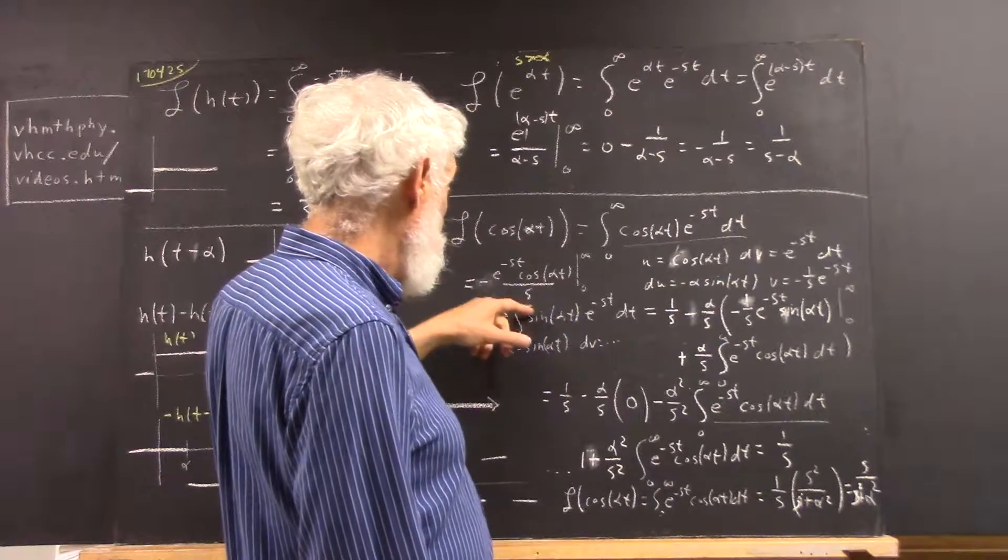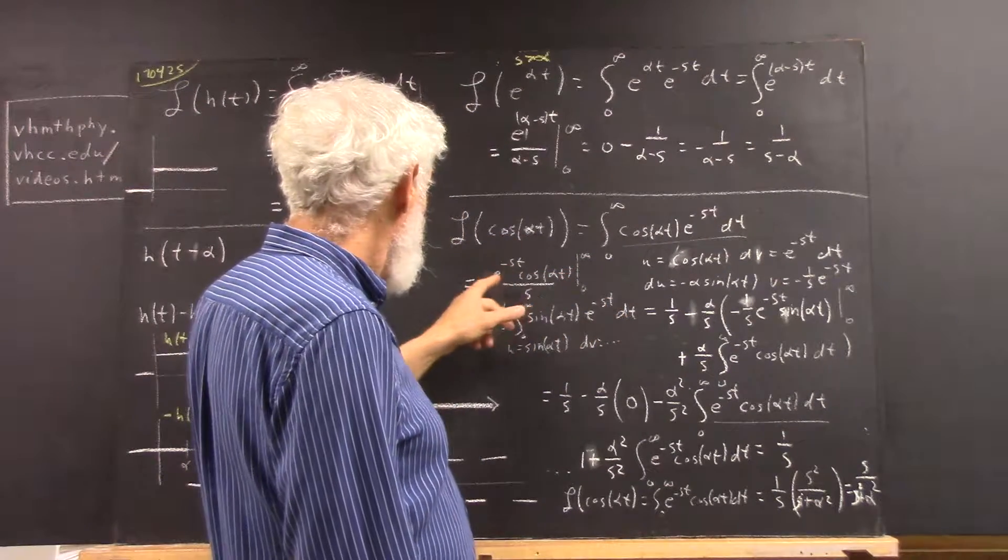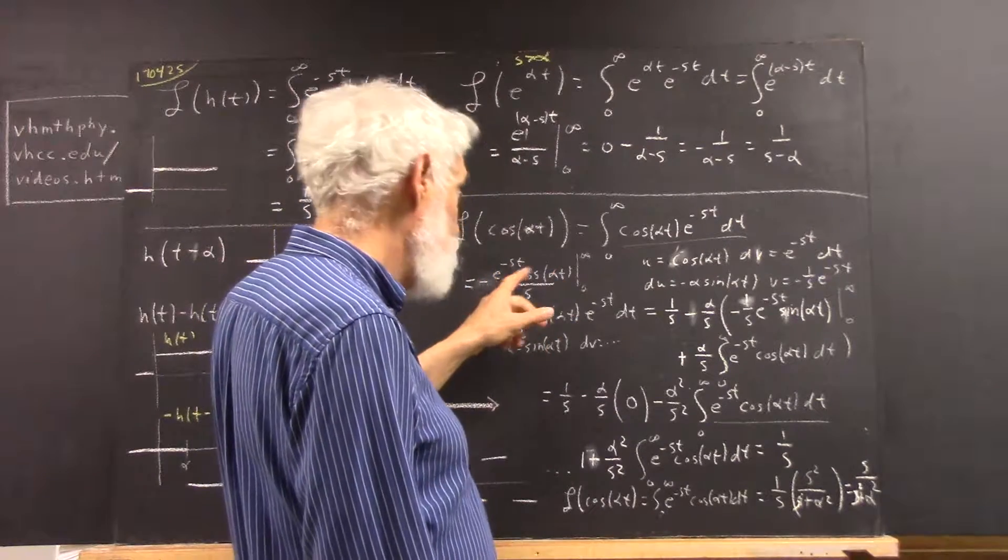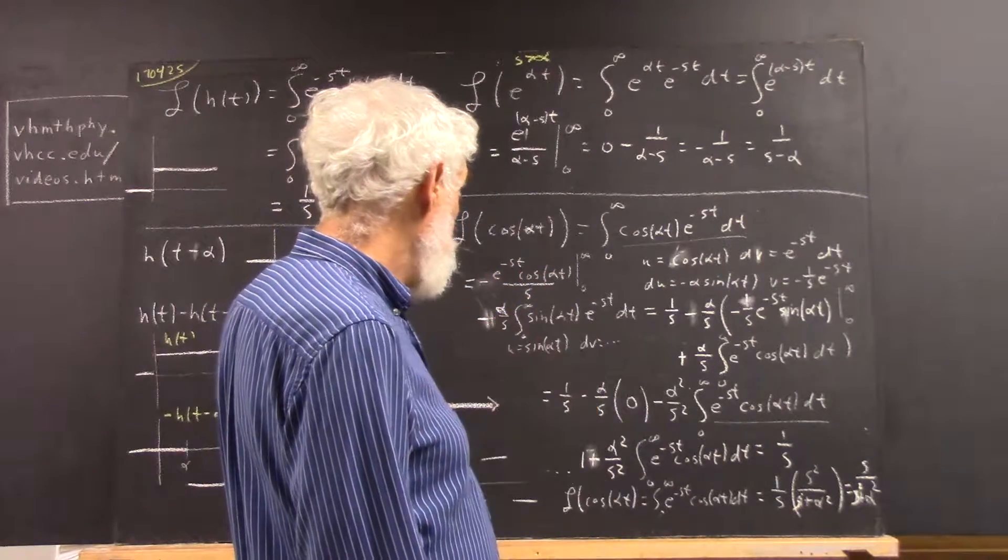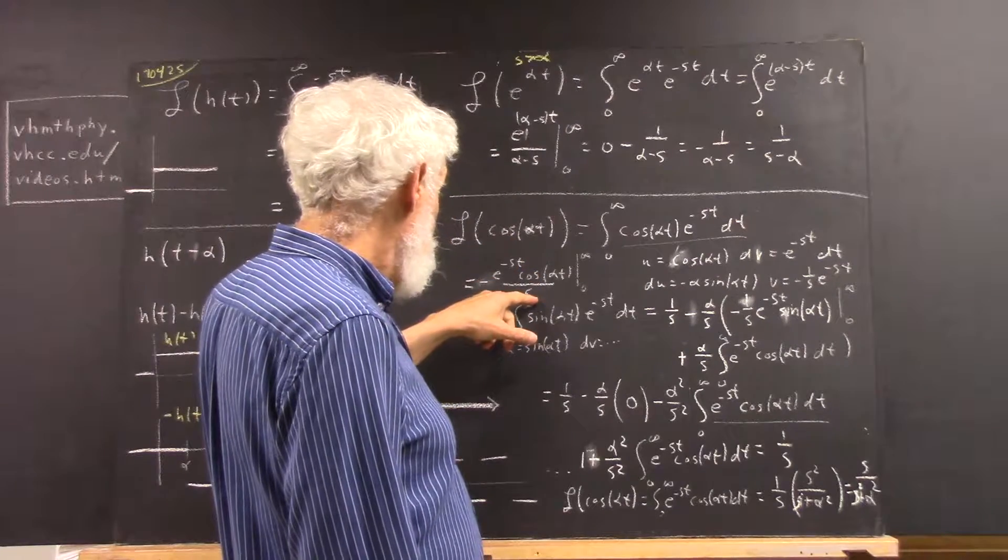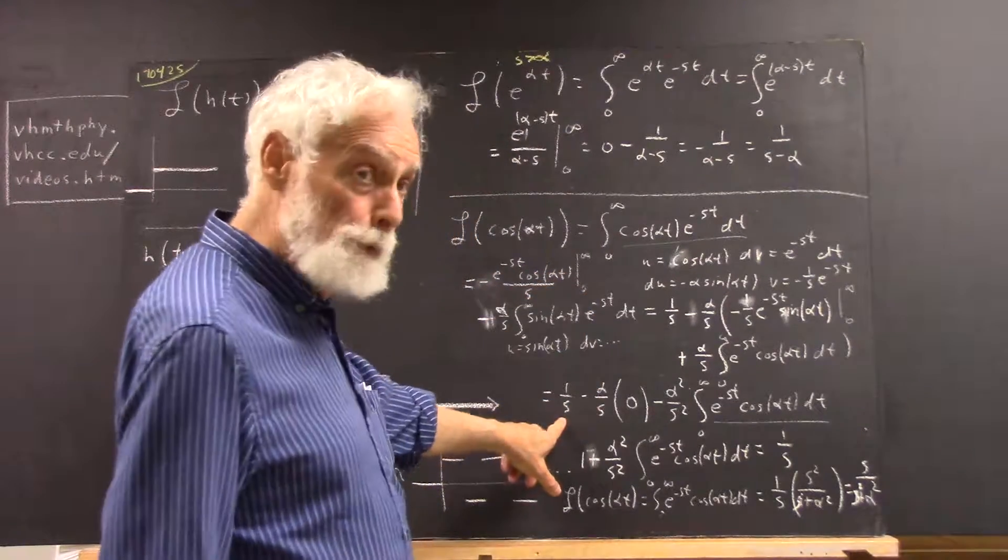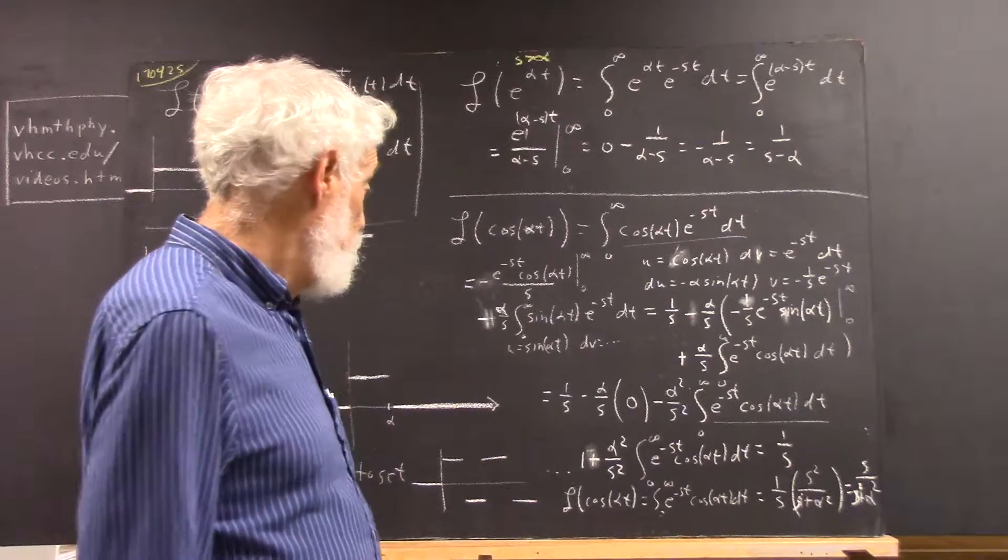At evaluated at zero, we're going to have a negative one over s, because the exponential of zero is zero. The cosine of zero is one. So, we're going to have a negative one over s, but we're going to be subtracting that because it's a lower limit. So, we're going to get a one over s out of that.